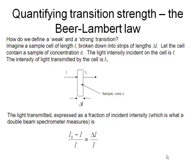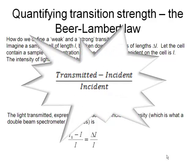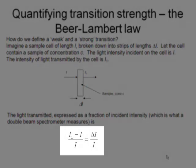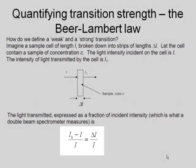The amount of light transmitted is expressed as a fraction of the incident intensity. So we do I1 minus I, transmitted intensity minus the incident intensity, and then we divide it by the incident intensity. And we call that delta I over I. That's the fraction of light transmitted by that thin strip of length delta L.